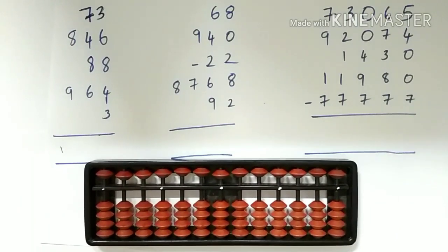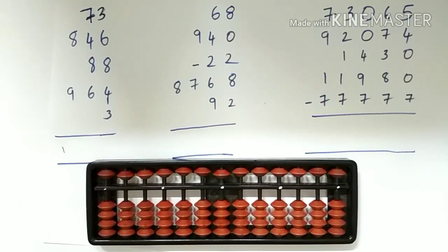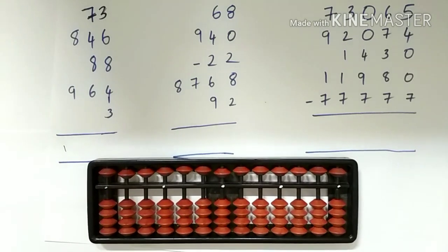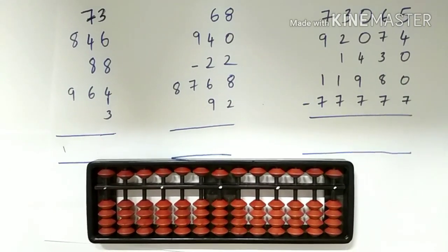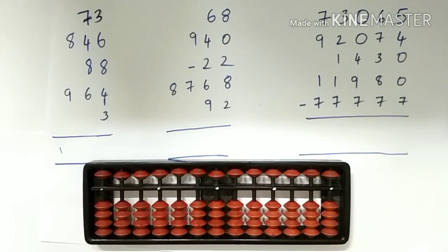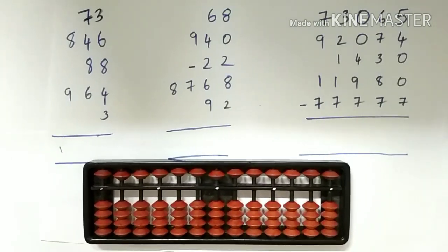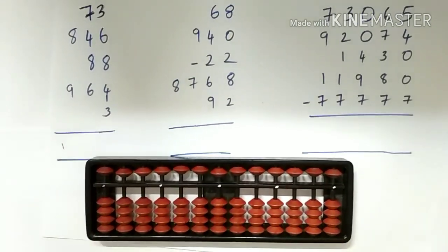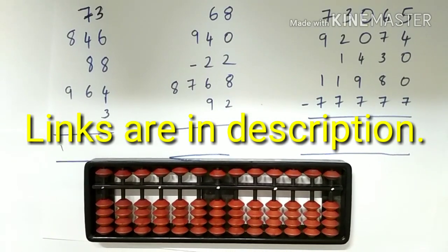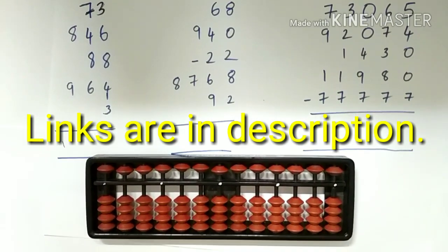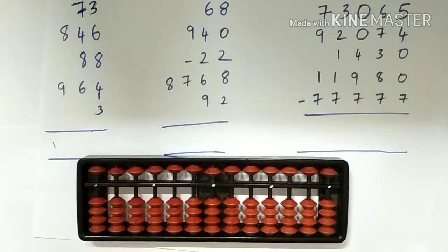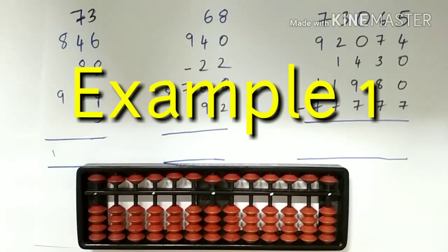Hi, let us see the addition of 2 digit, 3 digit, 4 digit and 5 digit numbers. I'll take some random examples and we'll add them. If you haven't watched the addition video, please do watch it first because it contains the concepts of addition. The link is provided in the description below. Let us start by taking the first example.